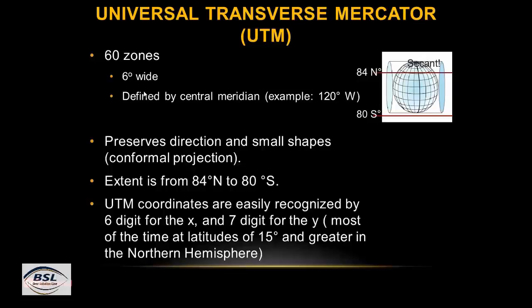UTM coordinates are easily recognized by 6 digits for the x-coordinate and 7 digits for the y-coordinate, most of the time at latitudes of 15 degrees and greater in the northern hemisphere. When using GIS and transferring a map to UTM coordinate system, you can see at the bottom that x will show 6 digits and y will show 7 digits in the GIS window.